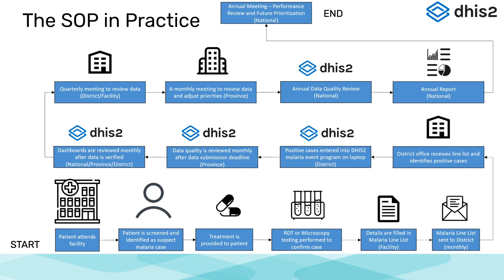In the previous subsection of this course, we used several diagrams to discuss the structure of event and tracker programs. For a specific use case, these program diagrams are produced by reviewing a program workflow from start to finish, using standard operating procedures or other existing documentation when available. In order to properly and thoroughly define the use case, it is necessary to zoom in and review each stage of the workflow in detail to understand how it works in practice and how DHIS-2 users will interact with it.